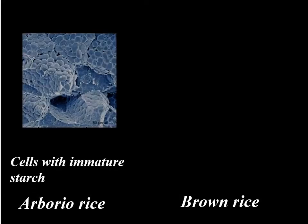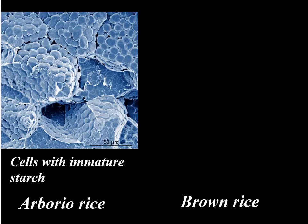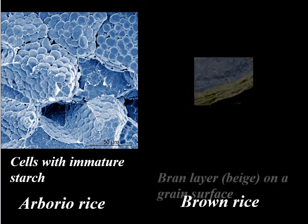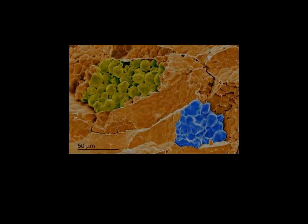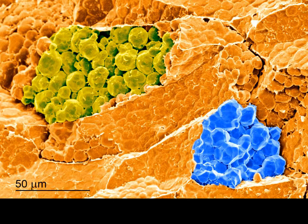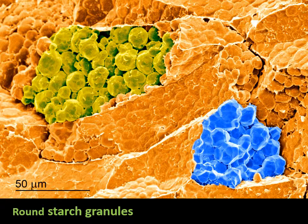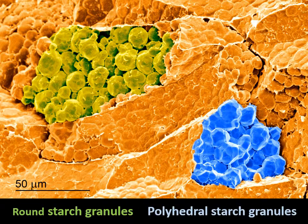A higher magnification and color enhancement reveal interesting features: round starch granules with void spaces around them in the Arborio rice grain at left, and a layer of bran on the surface of the brown rice grain. Two forms of starch granules are shown in this image in false colors: round granules at left, which give the grain a white chalky appearance as they reflect light, and polyhedral particles at right. When tightly packed, they look like perfect rice with a translucent appearance.